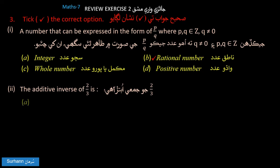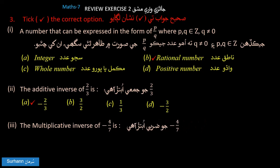Now we can see the sign change. What is the multiplicative inverse of minus 4 upon 7? The multiplicative inverse of minus 4 upon 7 is minus 7 upon 4.